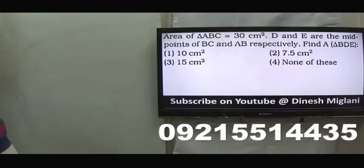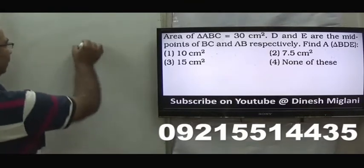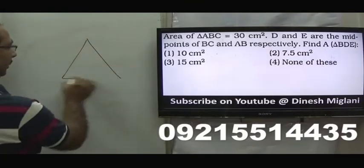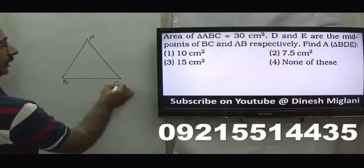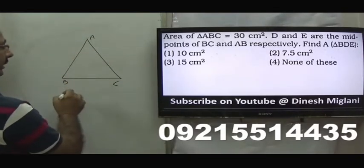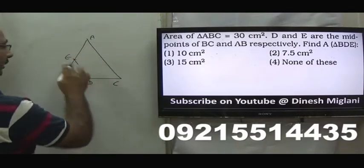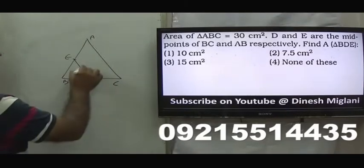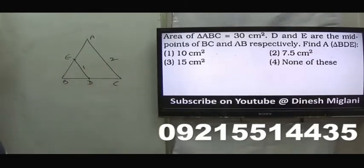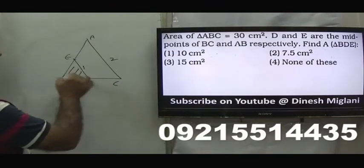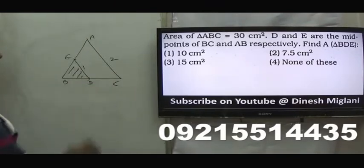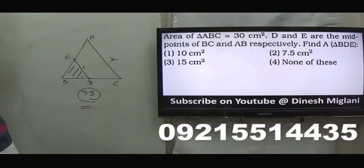Next question: area of triangle ABC is 30. D and E are the midpoints of BC and AB respectively. We have to find the area of triangle BDE. Since D and E are midpoints, the ratio of sides is 1:2, so the area of triangle BDE is one quarter of the total area. Hence area of BDE = 7.5 square centimetres. The second option is my answer.